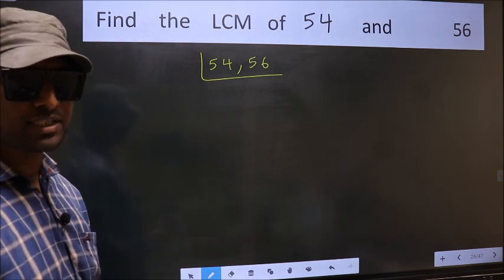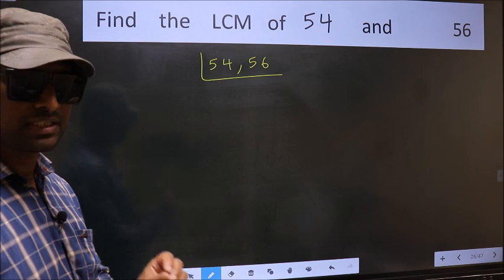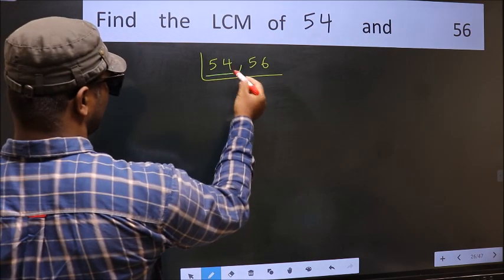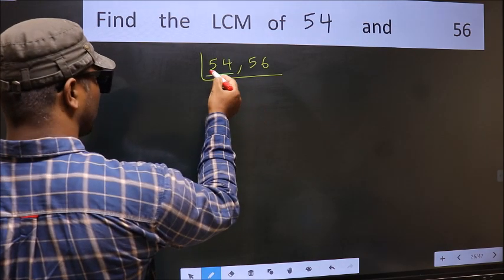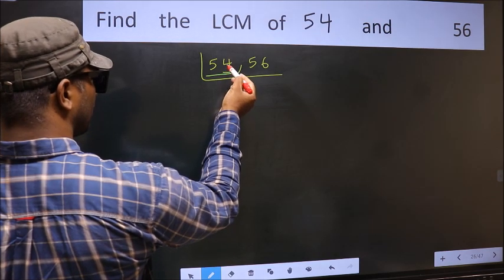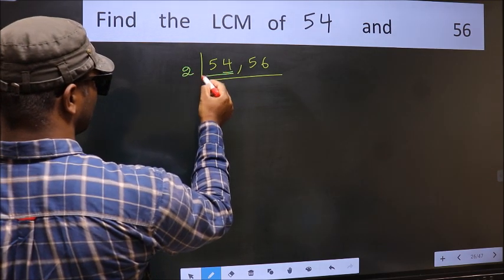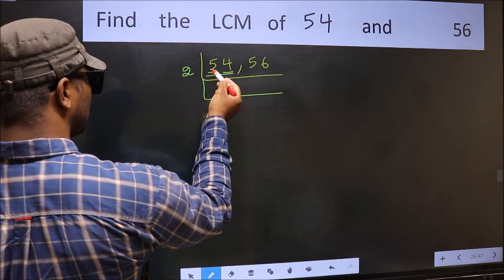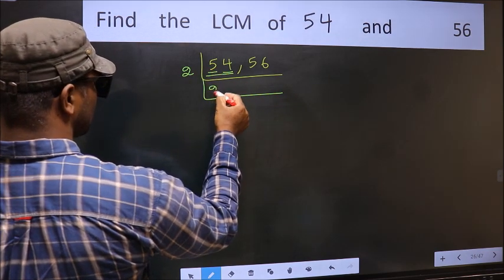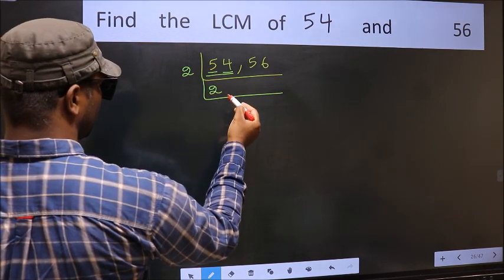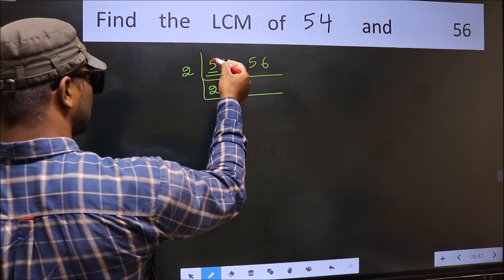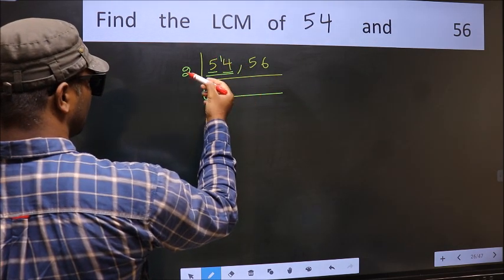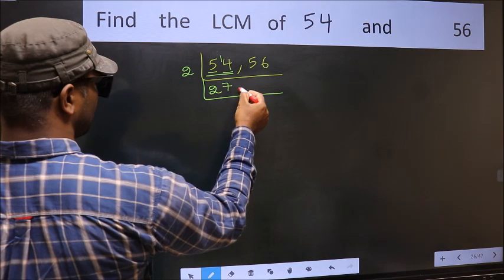Now we should focus on the first number which is 54. For this number, last digit 4 is even, so take 2. First number 5 — a number close to 5 in the 2 table is 2×2 is 4. 5 minus 4 is 1, carried forward: 14. When do we get 14 in the 2 table? 2×7 is 14.